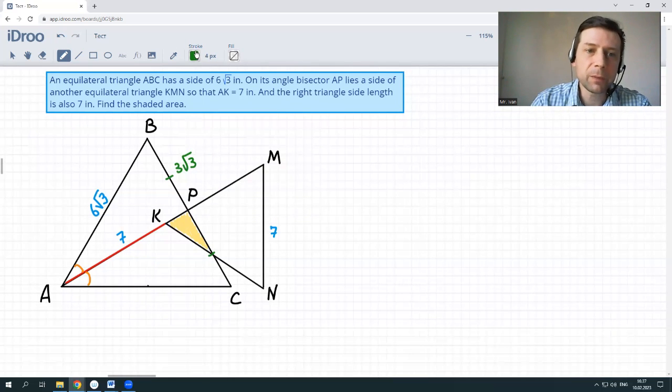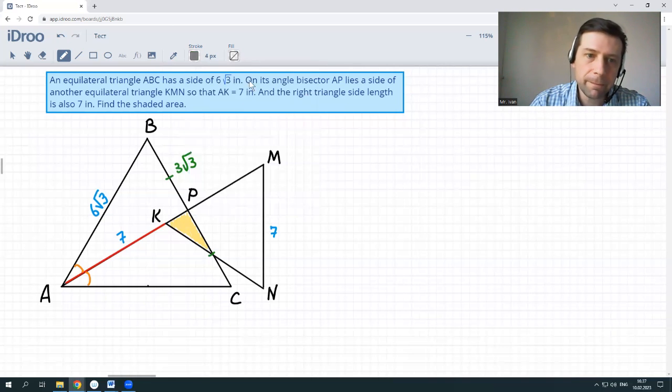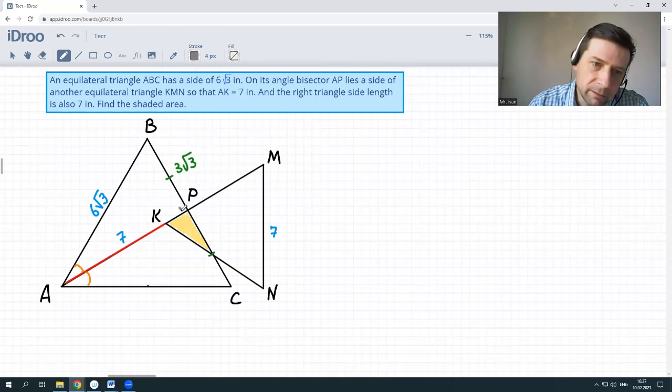We should mark that angle BPK is the right angle, right? BPK is the right angle. Same as KPC. Let's call this also maybe T point, KPT triangle, let's call it.